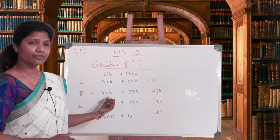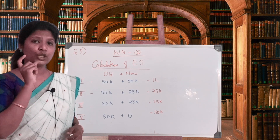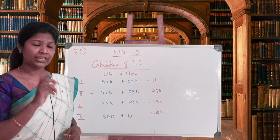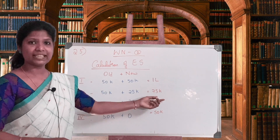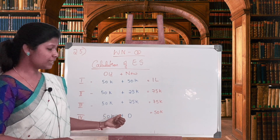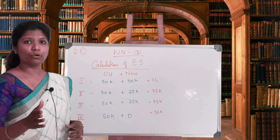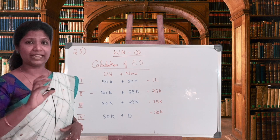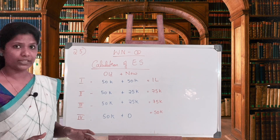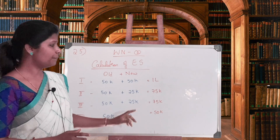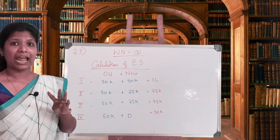Under plan one: 50,000 plus 50,000 gives 1 lakh equity shares. Under plan two, new equity is 25,000 shares as stated in the question — so 50,000 plus 25,000 equals 75,000 total. Similarly, for plan three: old 50,000 plus new 25,000 equals 75,000 equity shares. For plan four, which is all debenture, only the old 50,000 remains and new equity is zero. So totals: plan one — 1 lakh, plan two — 75,000, plan three — 75,000, plan four — 50,000 equity shares.